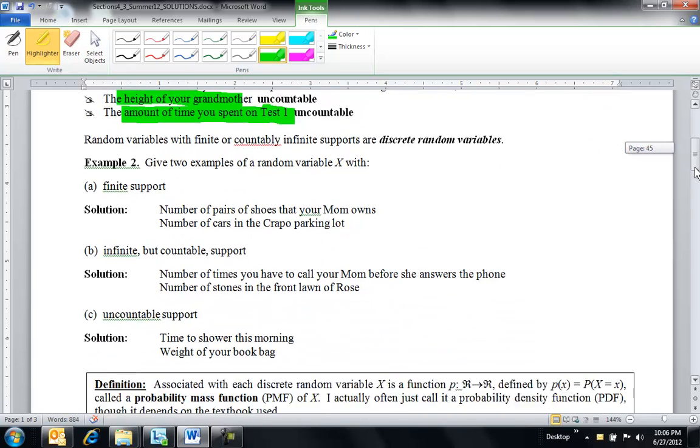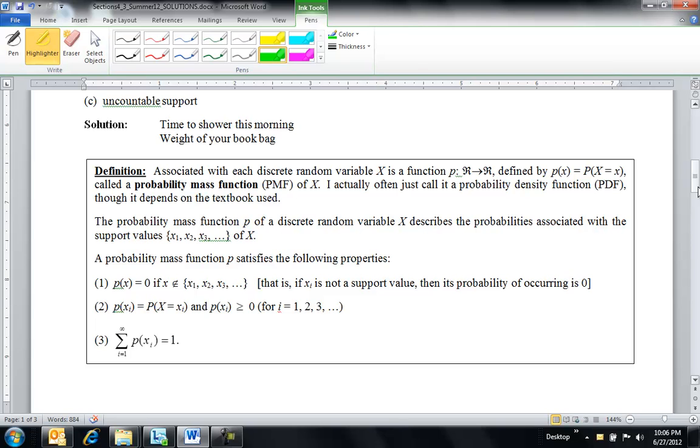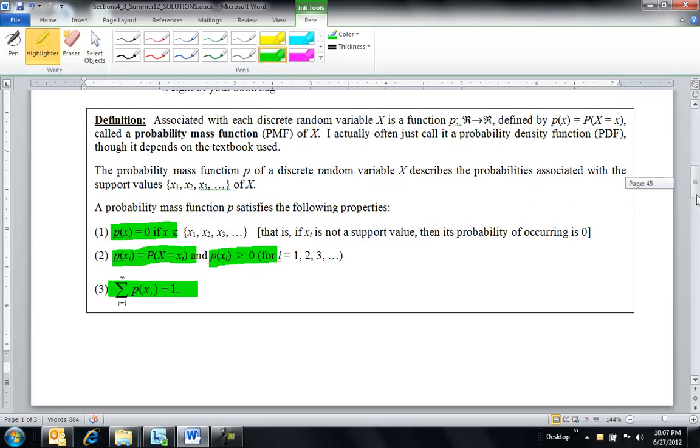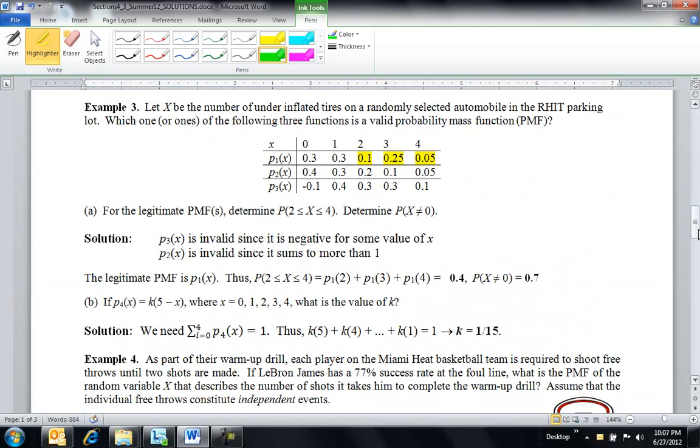Down here I just gave a couple examples that we talked about in class. And when you do define this nice function, I told you in the other chapter we call it p of x, f of x - they're all functions. A couple properties of this function: p(x) is 0 for anybody not in the support, so if I don't list the support value, I'm assuming that its probability is 0. The probability x takes on the value xi, it's just written p(xi), and all these better be positive. And the sum of all the probabilities of these support values better sum up to 1.